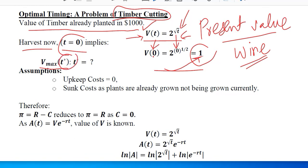There are a few assumptions. One is the upkeep cost - the forest is not taken care of, especially by investing something or by spending some cost. It is being taken care of automatically by nature. Some costs are there as the plants are already grown, not being grown currently.